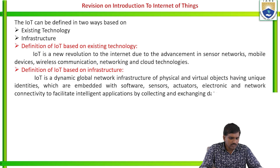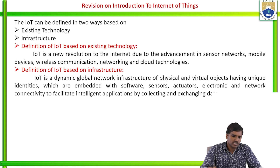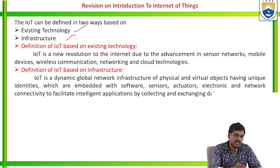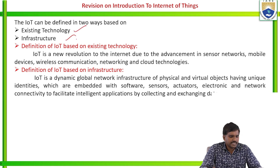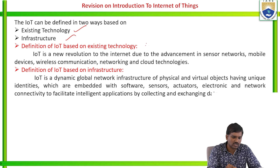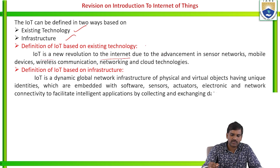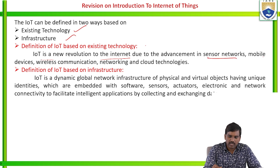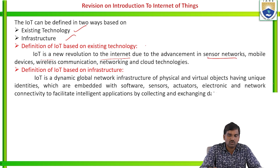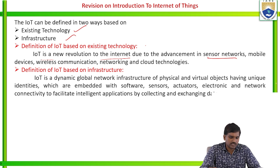Here are two definitions of IoT based on existing technology and infrastructure. Based on existing technology: IoT is a new revolution to the internet due to the advancement in sensor networks, mobile devices, wireless communication and network cloud technology.